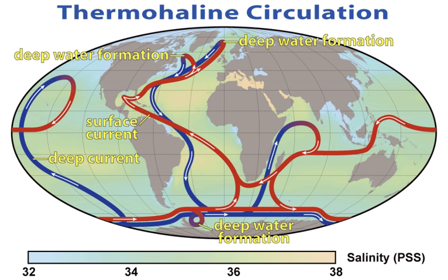Direct estimates of the strength of the thermohaline circulation have been made at 26.5°N in the North Atlantic since 2004 by the UK-US RAPID Programme. By combining direct estimates of ocean transport using current meters and subsea cable measurements with estimates of the geostrophic current from temperature and salinity measurements, the RAPID Programme provides continuous, full-depth, basin-wide estimates of the thermohaline circulation — or, more accurately, the meridional overturning circulation. The deep water masses that participate in the MOC have chemical, temperature, and isotopic ratio signatures and can be traced, their flow rate calculated, and their age determined, including using ²³¹Pa/²³⁰Th ratios.